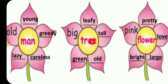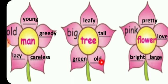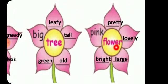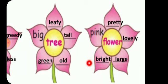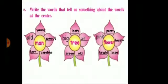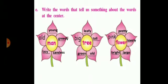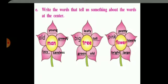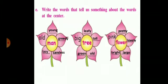Now the next center word is 'tree.' 'Big' is given — big tree. We can say 'leafy tree' — leafy means having so many leaves — 'tall tree,' 'old tree,' 'green tree.' Then the next center word is 'flower.' 'Pink' is given — pink flower. Then 'pretty flower' — pretty means beautiful — 'lovely flower,' 'large flower,' 'bright flower.' All these words tell something more about the center word.